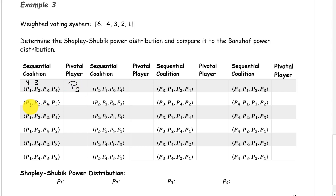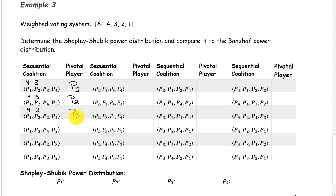Next, the sequential coalition with players 1, 2, 4, and 3: Player 1 has a weight of 4. Player 2 has a weight of 3, and player 2 is the player that causes this to be a winning coalition. So player 2 is our pivotal player. Next, the sequential coalition with players 1, 3, 2, and 4: Player 1 has a weight of 4. Player 3 has a weight of 2, and now we've met our quota, so player 3 is our pivotal player.